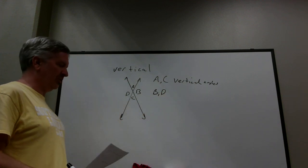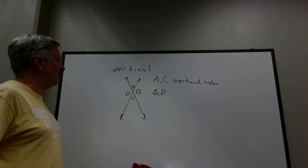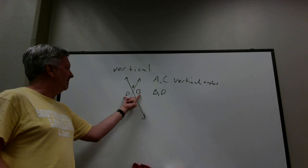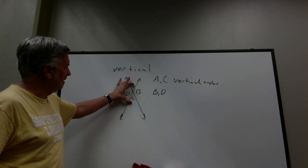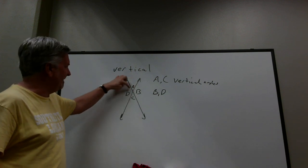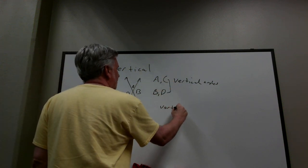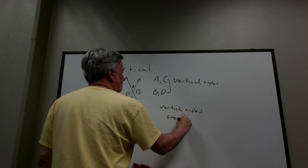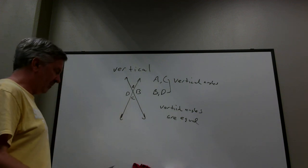A and C are vertical angles; B and D are vertical angles. Just by looking at the picture, vertical angles are equal — they have equal measure. In my picture, A and C are both acute, and B and D are both acute. So as pairs, vertical angles are equal. A and C are equal, B and D are equal. I'm not saying all four of them are equal — just as pairs.